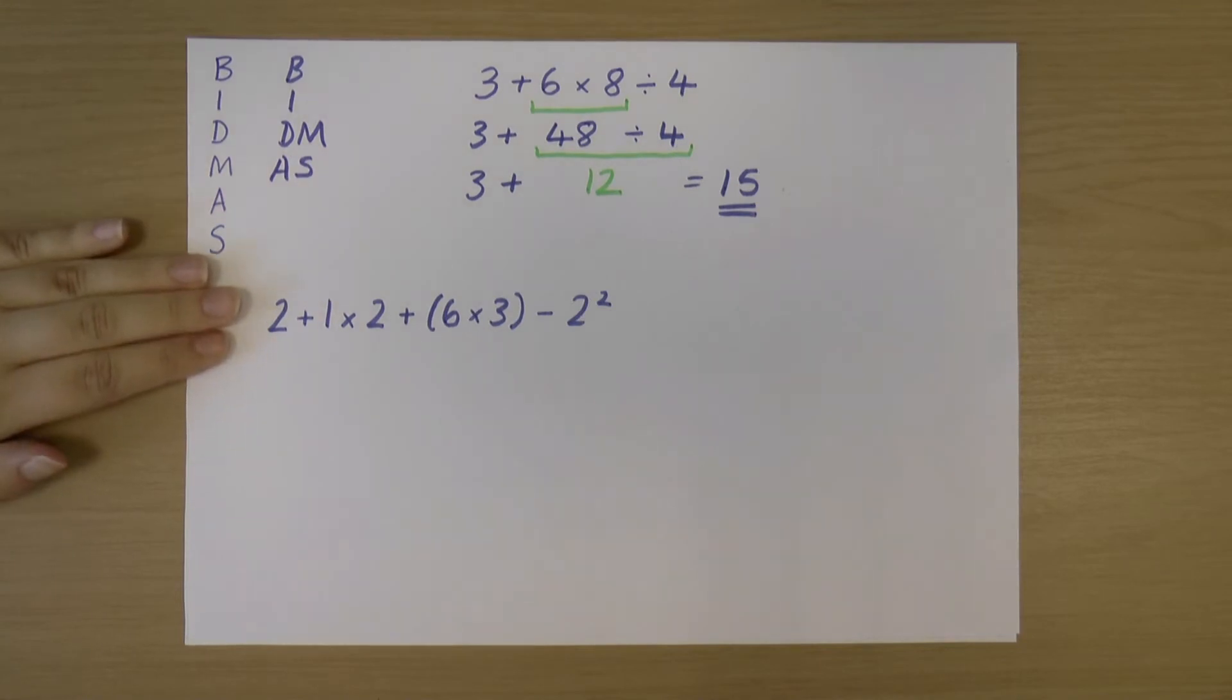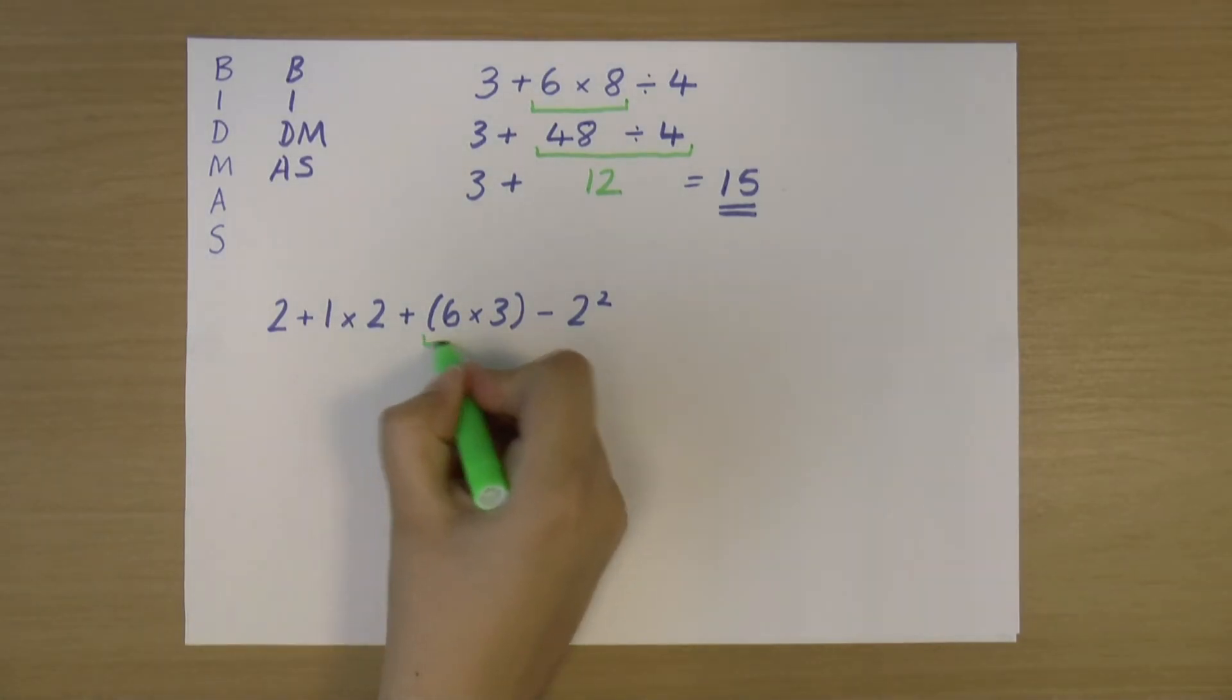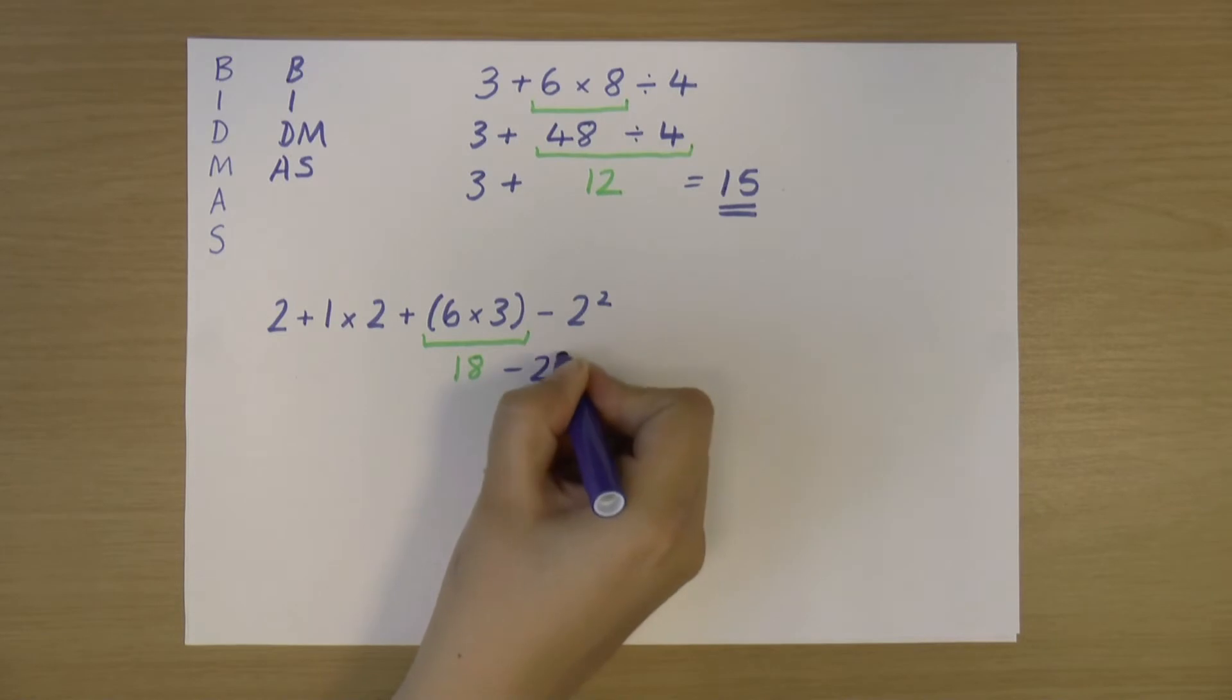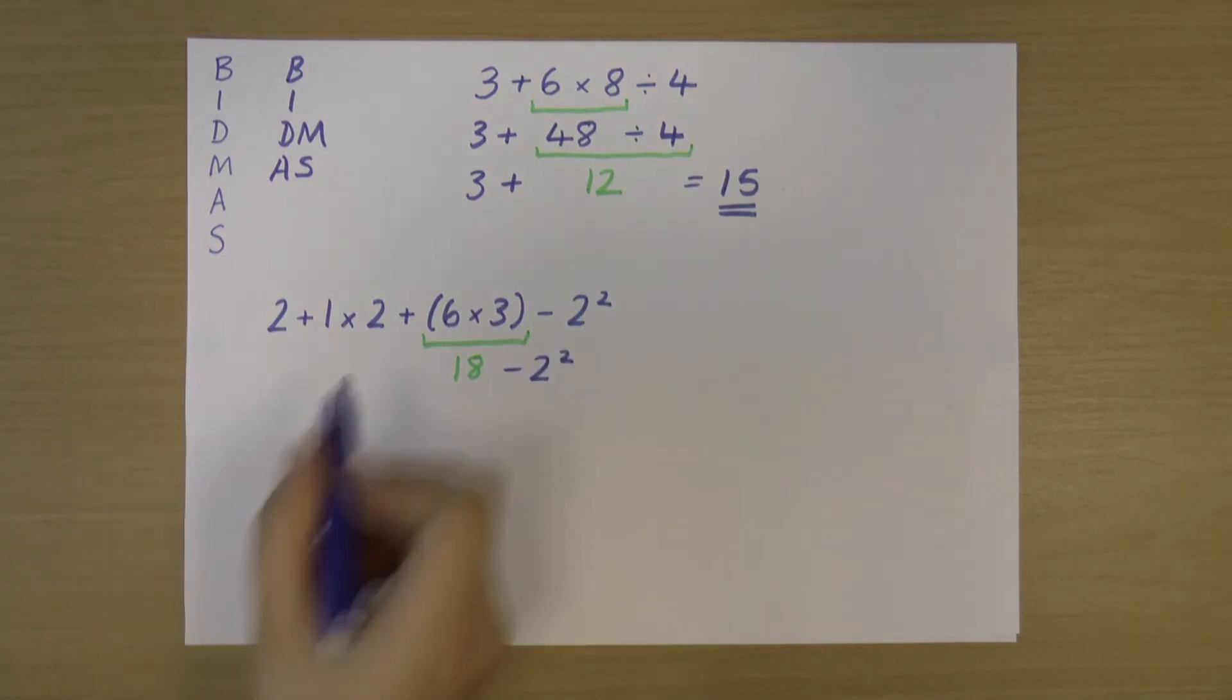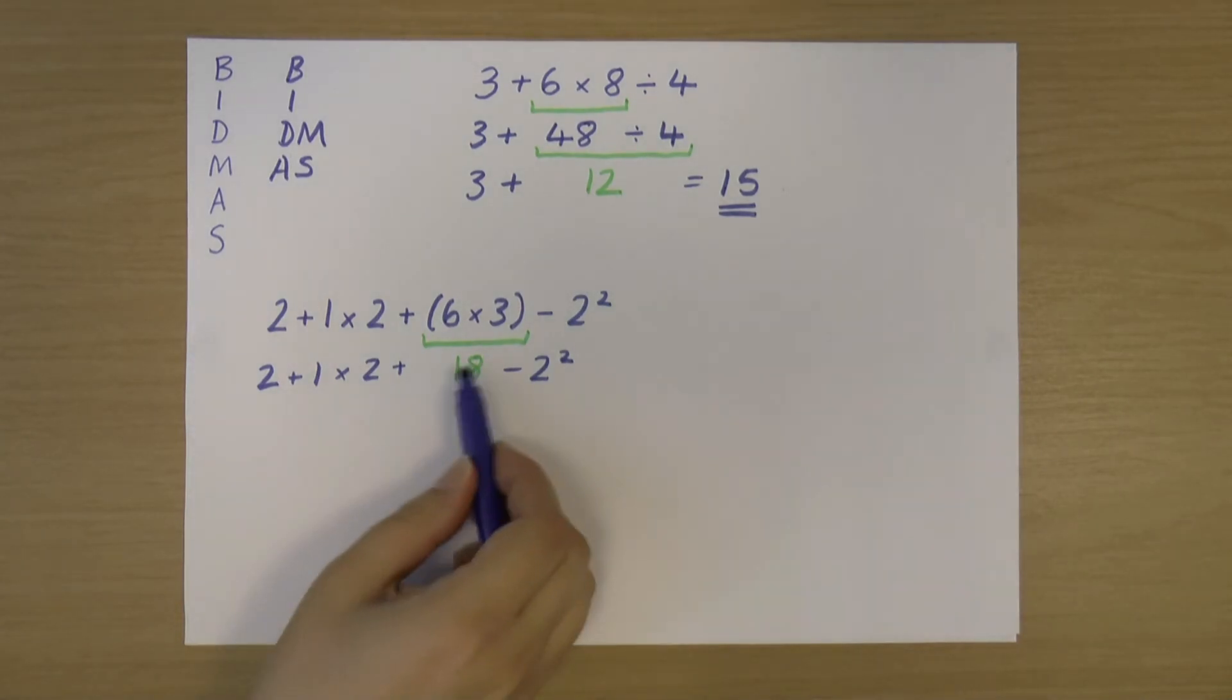So, different sum. Again, I'm going to follow through with BIDMAS and see what we've got. Starting at the beginning, do I have any brackets? Well, yes, actually, I do. I've got this here in brackets. So what is 6 × 3? It's 18. And then I'm going to rewrite this sum out again. So just like I did with the previous one, I'm just going to write the bits that I didn't just do. So I've got 2 × 1 × 2 + 18 - 2². There we go. I've rewritten it out, just replaced the bit I did with the answer.